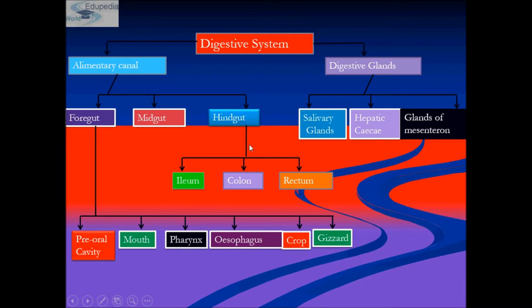The hindgut is divided into three parts: ileum, colon, and rectum. The digestive glands are divided into three types: salivary glands, hepatic caeca, and glands of the mesenteron.